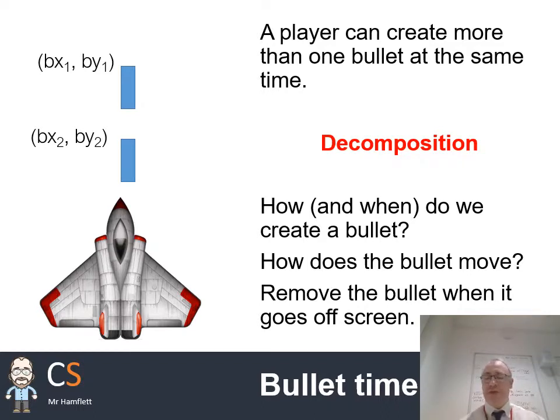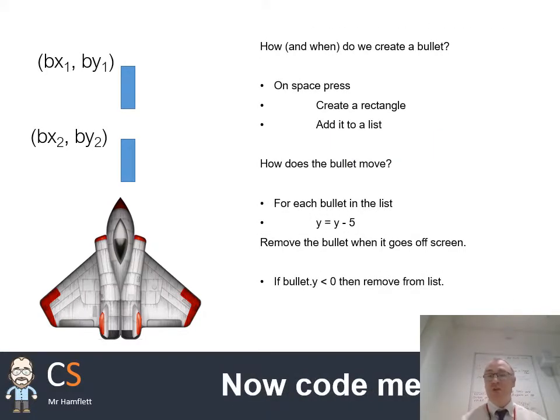I'm going to start thinking about what a bullet is. It's very similar to the way we think about invaders. It's going to have an image or drawing, it could be just a simple rectangle, it's going to have coordinates. What's really important: there's gonna be more than one. I might be able to fire multiple bullets, so I've got two bullets each with their own coordinates. Therefore, I'm gonna need a list of bullets.